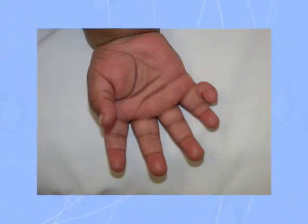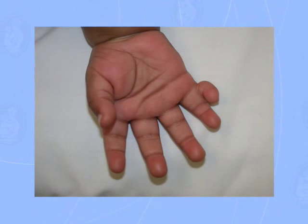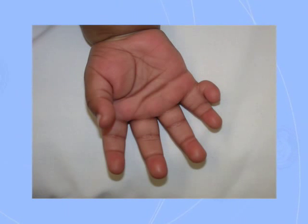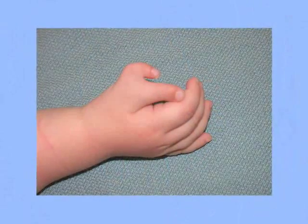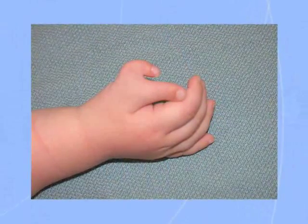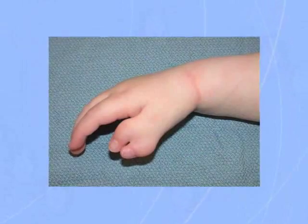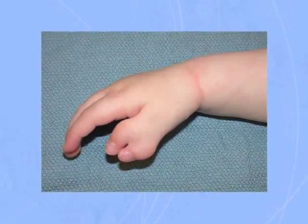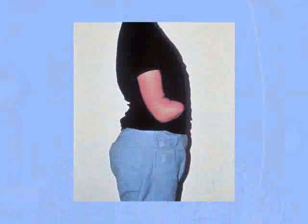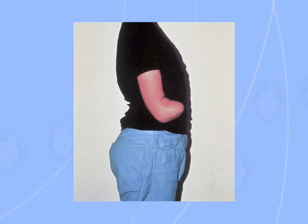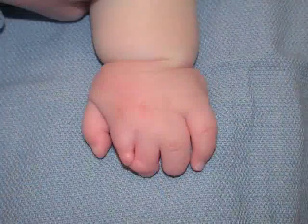The most common is something called polydactyly, which is just many digits. You can be born with an extra small finger, an extra thumb, or one in the middle in terms of extra digits. That's on average somewhere between 1 in 1,500 to 1 in 3,000 live births. The least common would be something like an amputation above the elbow, which may be as rare as 1 in 30,000 to 1 in 300,000 live births. So the spectrum is pretty large.